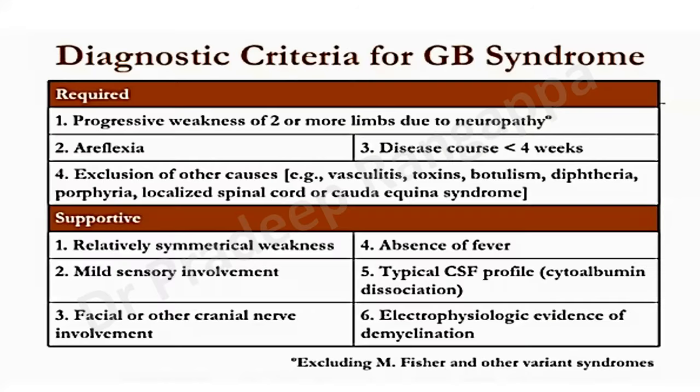When you talk about diagnostic criteria, this is the Asbury's criteria, which is traditionally taught. The key features are areflexia and symmetrical neuromuscular weakness. There can also be autonomic dysfunction, sensory dysfunction, and albuminocytological dissociation. These are the typical components of GBS, as put together in the Asbury's criteria.